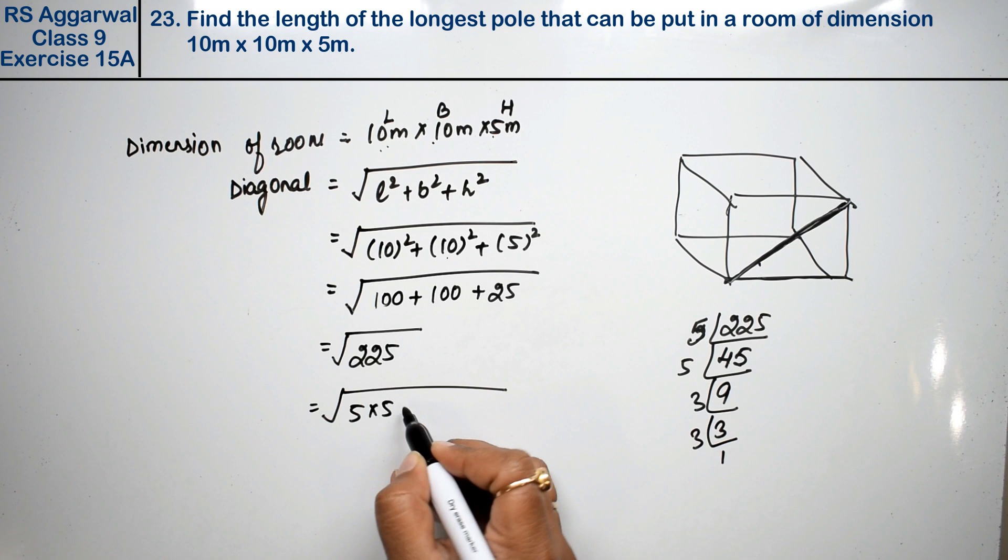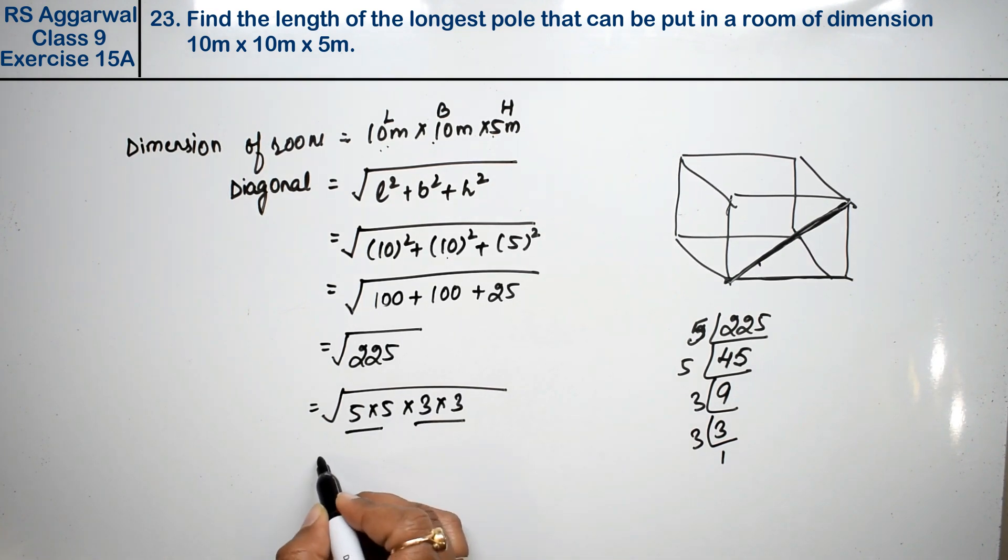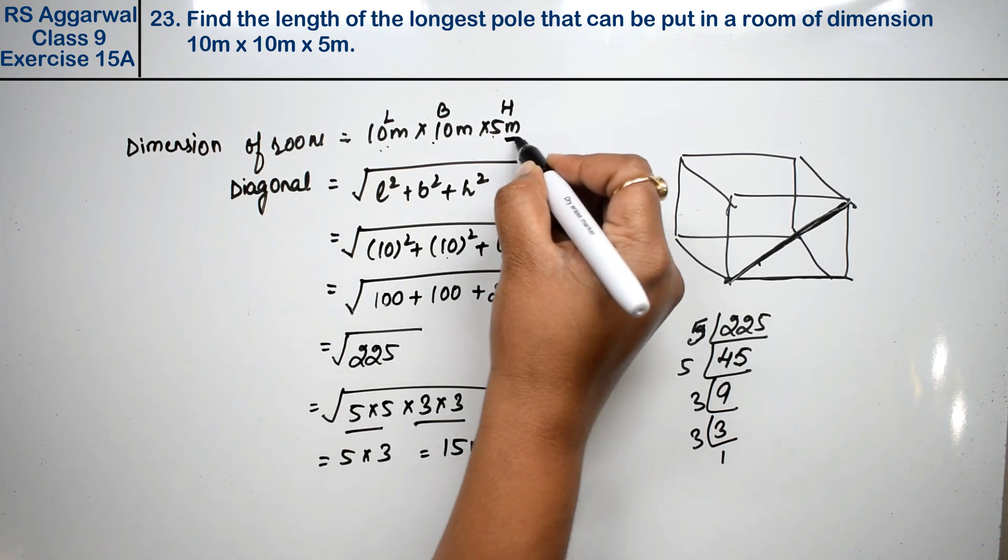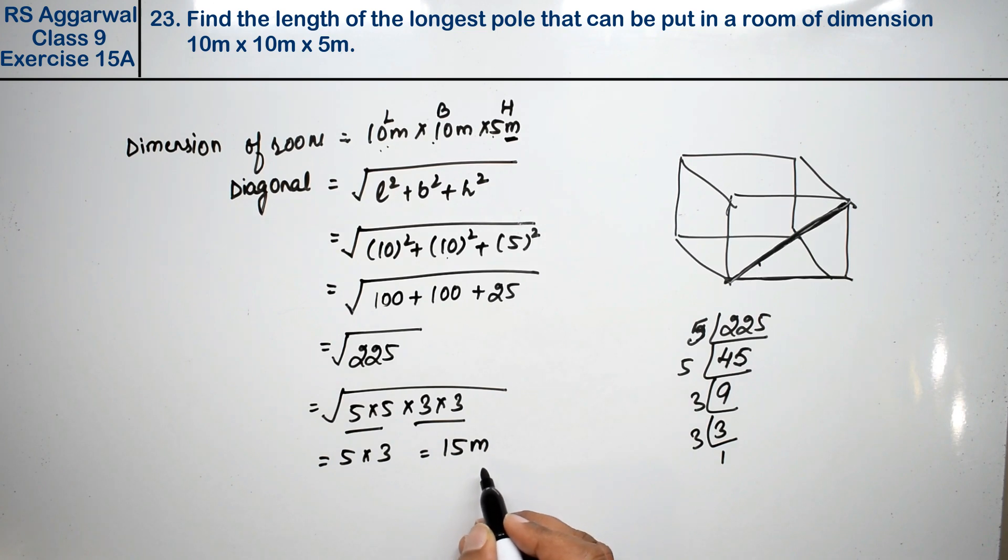5 into 5 into 3 into 3. Make two pairs because it is square root and put it in one place. That means 15 meter. Keep it in the unit. So 15 meter is the answer.